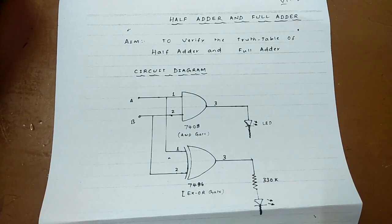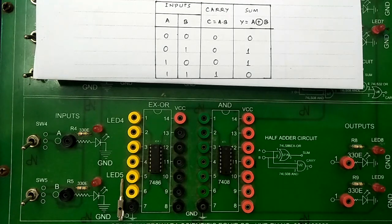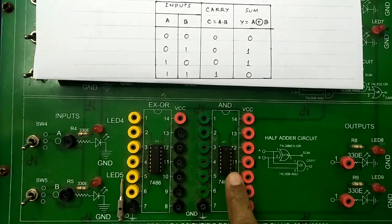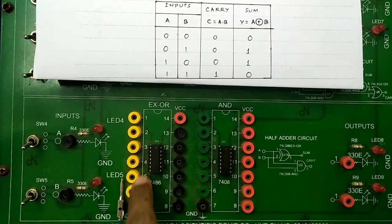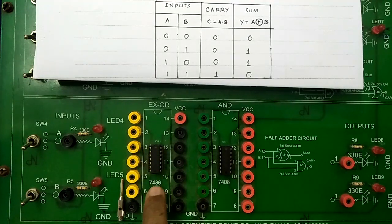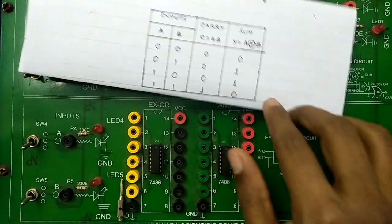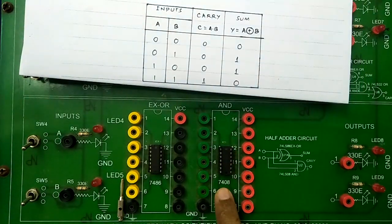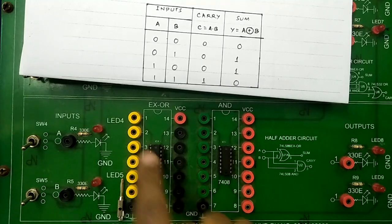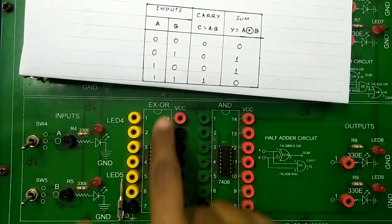Let us construct the half adder and verify its truth table. The half adder consists of two gates: one is the XOR gate and the other is the AND gate. The IC number for the XOR gate is 7486, and the IC number for the AND gate is 7408. These are the pins of the IC.